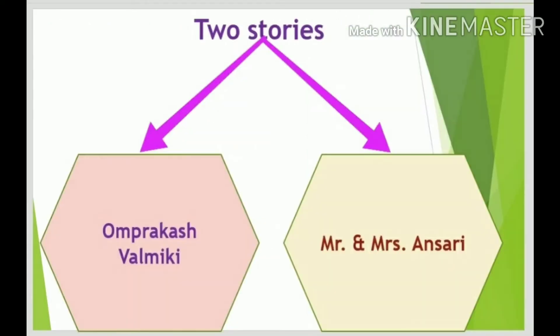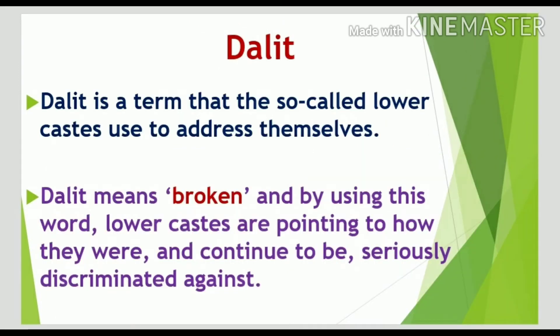There are two real stories in this chapter that will show you how people experience inequality in India. The first story is of Om Prakash Valmiki and the second is of Mr. and Mrs. Ansari. The first story is about a Dalit boy named Om Prakash Valmiki. Dalit is a term that the so-called lower castes use to address themselves. Dalit means broken, and by using this word, lower castes are pointing to how they were and continue to be seriously discriminated against.